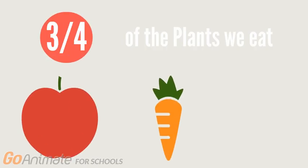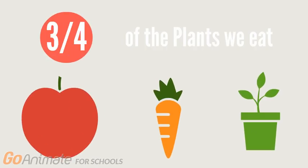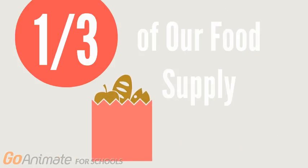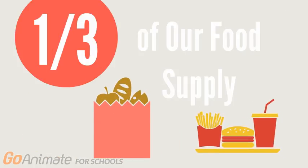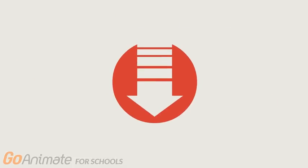Bees — they're the major pollinators of our world. They make our ecosystems run efficiently. They pollinate approximately three-fourths of the crops we eat and one-third of our entire food supply. Lately, a sharp decrease in the number of beehives has been observed. Trillions of bees have been lost in the past few years.